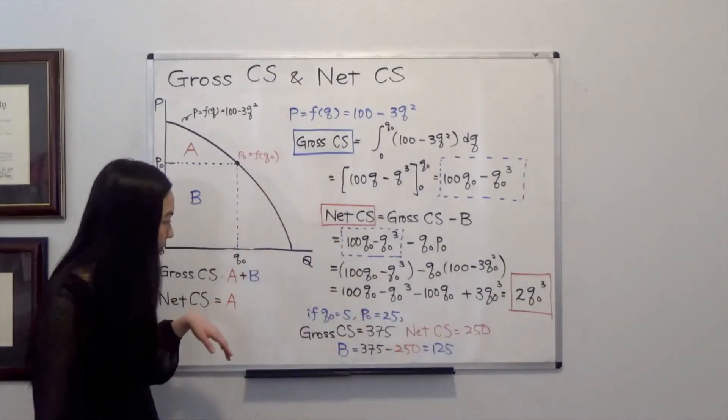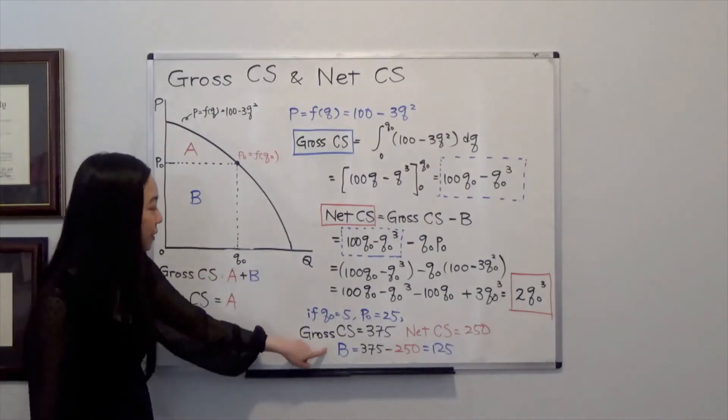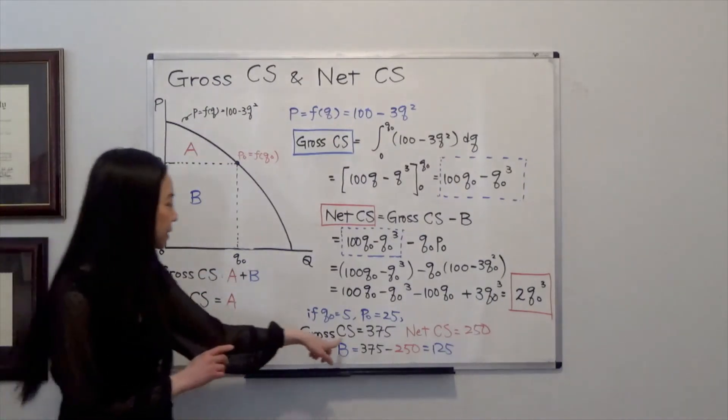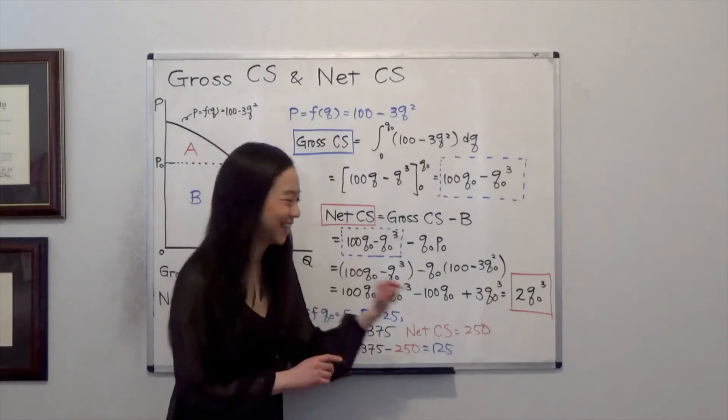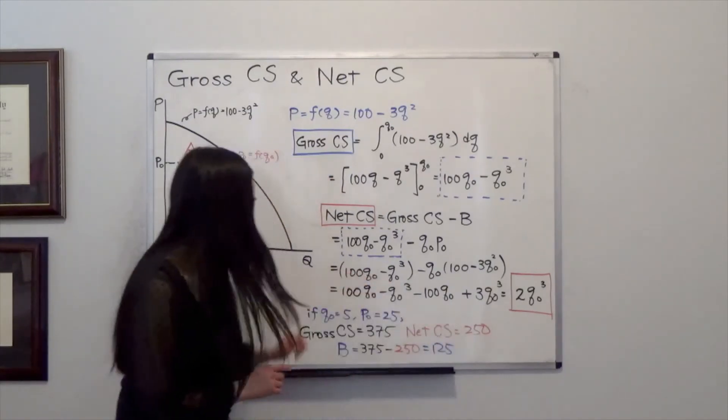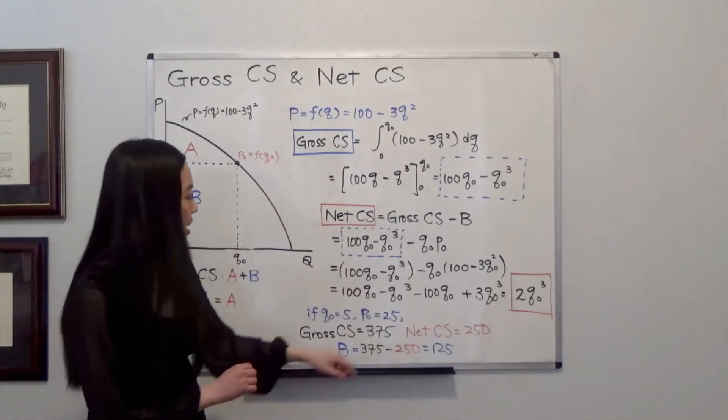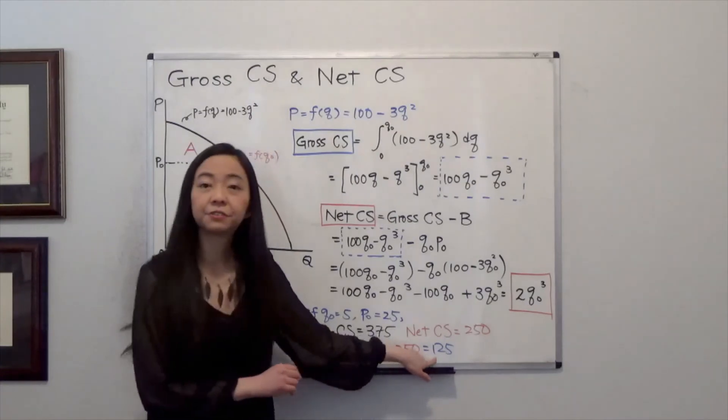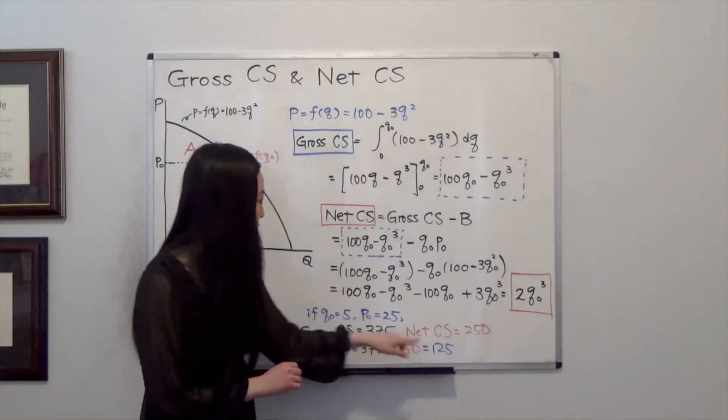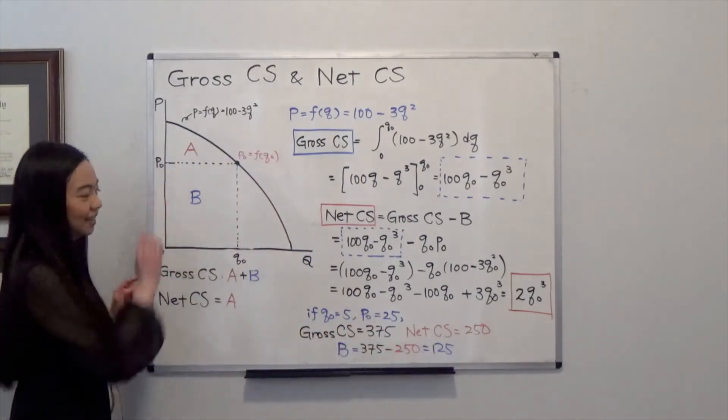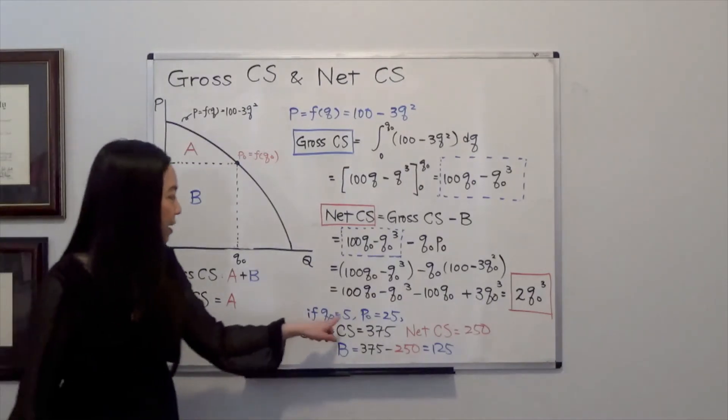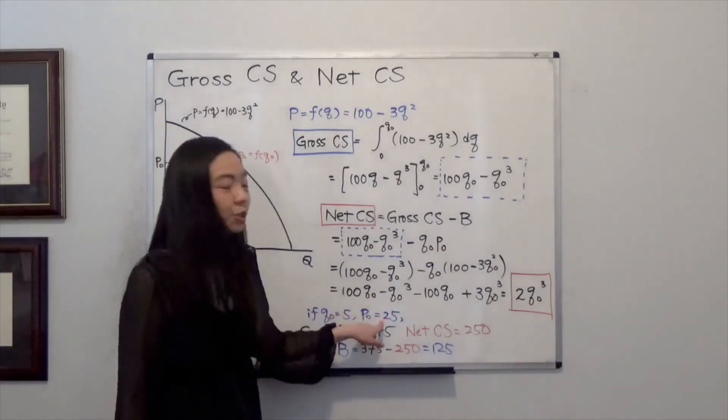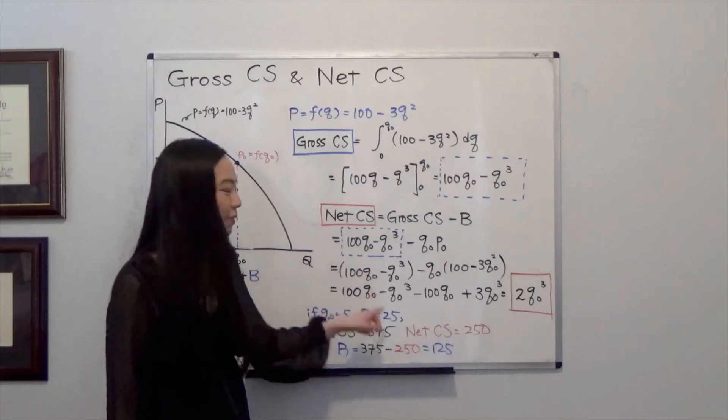And that tells you your area B must be the difference between gross consumer surplus and net consumer surplus. So that will be 375 minus 250, which gives you 125. And notice that your area B is exactly equal to 5 times 25. That's Q0 times P0.